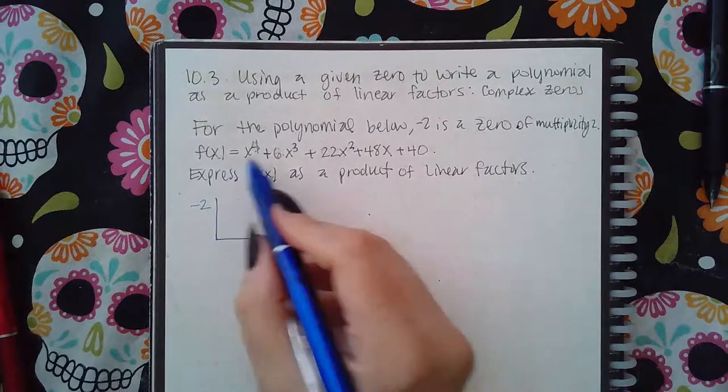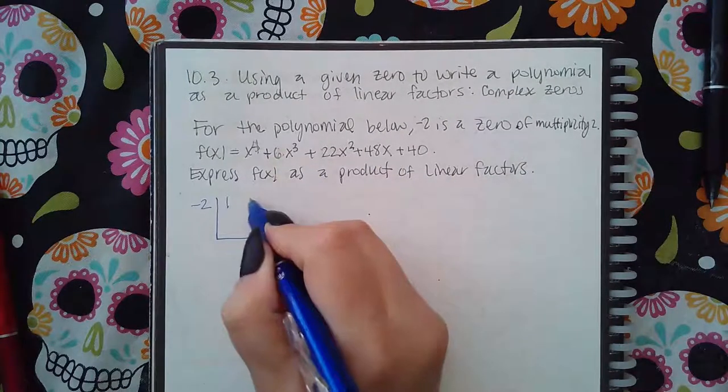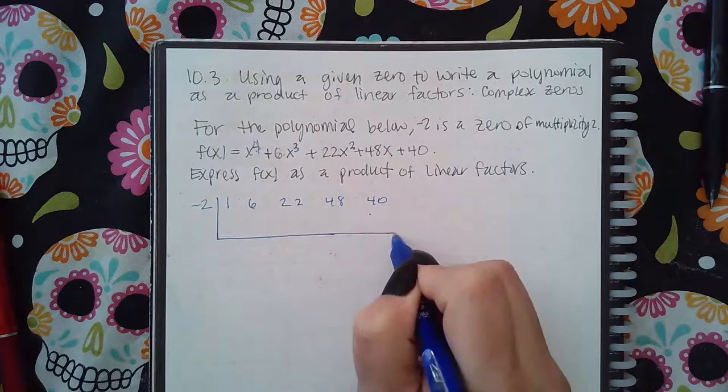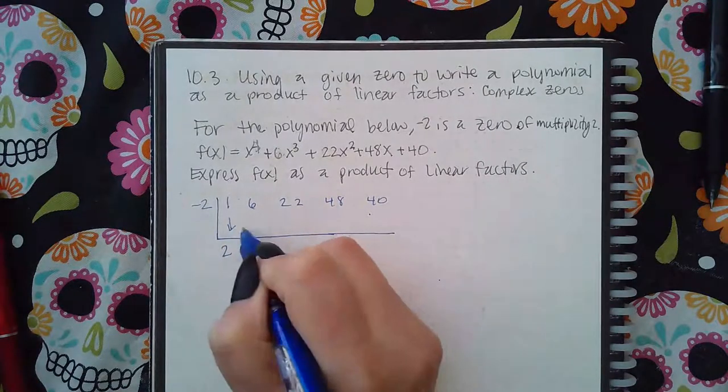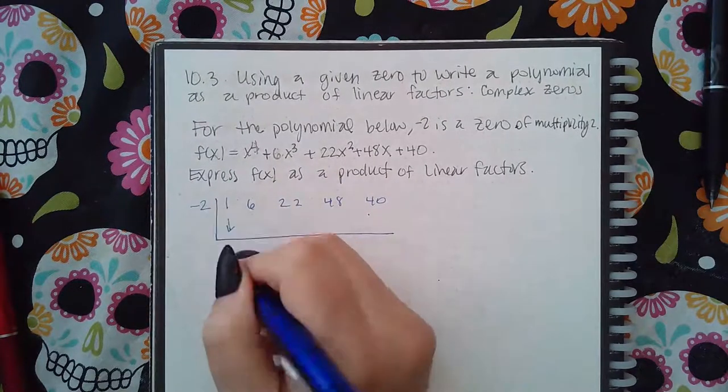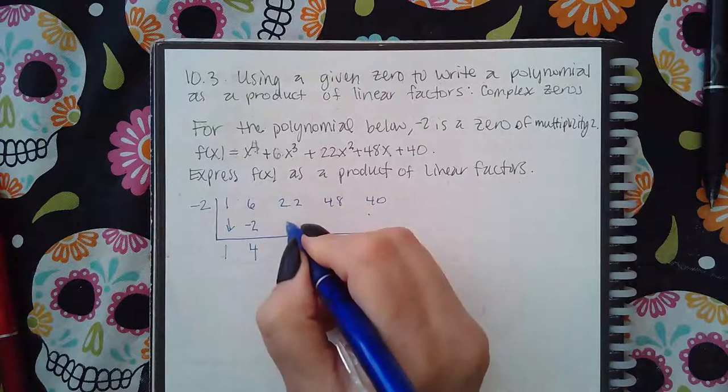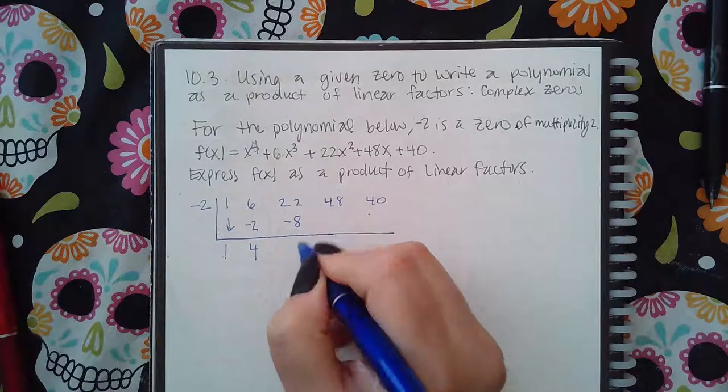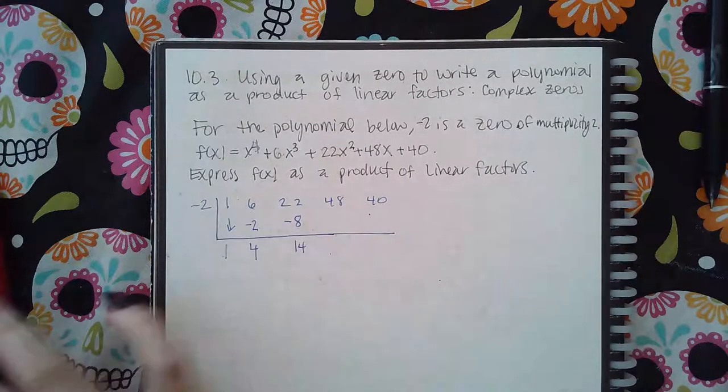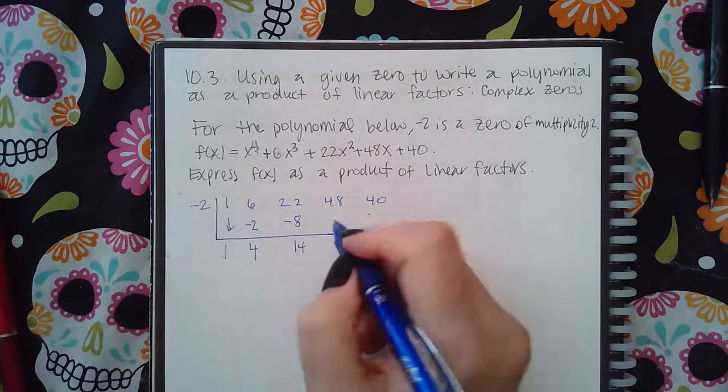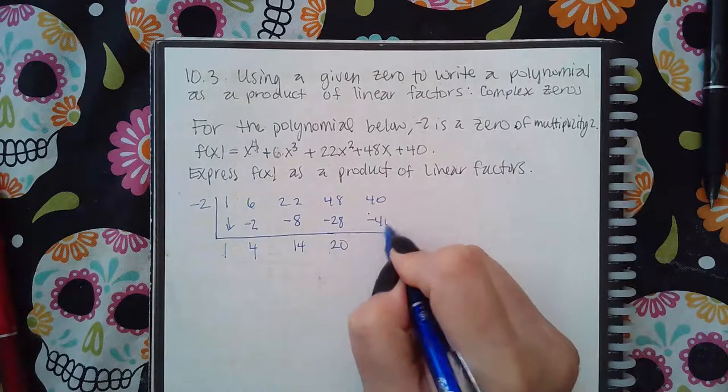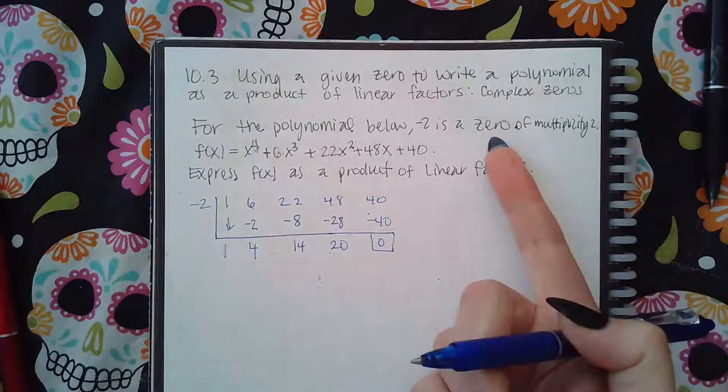This is already in order. I'm just going to write the coefficients in here. I'm going to bring it down, multiply, bring that down, multiply, multiply those, multiply those, and I get zero. I should because it is a zero.